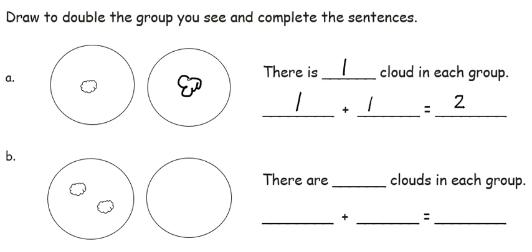In the next problem, I have two clouds in the group, and I will copy that to make the double. Now there are two clouds in each group, and 2 plus 2 equals 4.